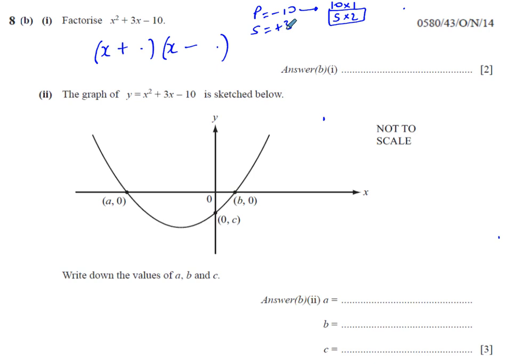It's a positive sum of 3, so it must be a positive 5 and it must be a negative 2. So we're left with x + 5 multiplied by x - 2. So there we've done B part 1. That's not a problem.